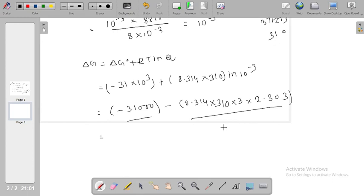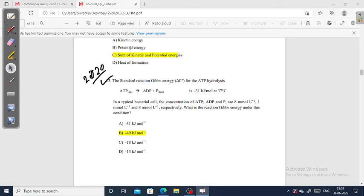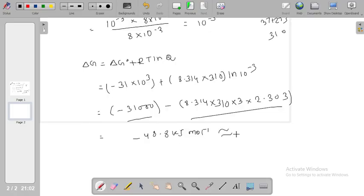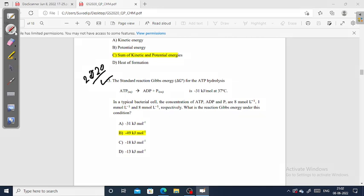So it is 8.314 × 310 × 3 × 2.303, minus here, and again minus 31,000. The final answer is minus 48.8 kilojoule per mole. Let's check which option is matching. It is approximately minus 49 kilojoule per mole, so option B is matching.